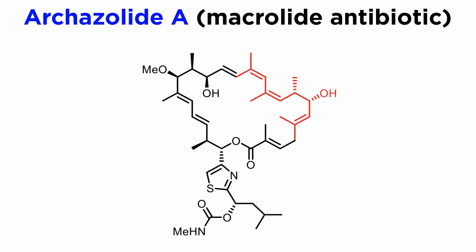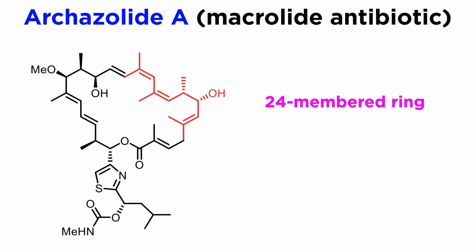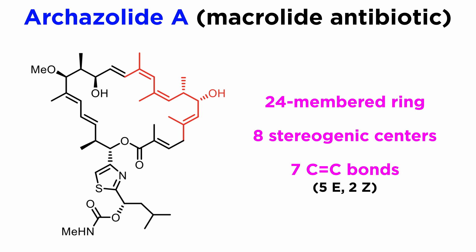Stereoselective olefin synthesis is usually a key step in the synthesis of natural macrolide antibiotics, as these compounds have multiple olefinic bonds. As an example of these widespread macrocyclic compounds, let's take Arcazolide A. This is a complex structure and quite a challenge to prepare. It features a 24-membered ring, eight stereogenic centers, and seven C–C double bonds, of which five are E and two are Z.